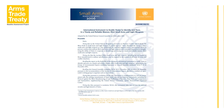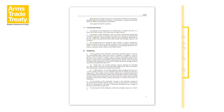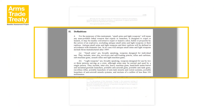The most relevant UN instrument that provides a description for SALW at the time of entry into force of the ATT is the Instrument to Enable States to Identify and Trace in a Timely and Reliable Manner Illicit Small Arms and Light Weapons, also known as the ITI, which was adopted by UN Member States in 2005.